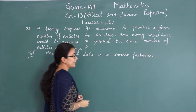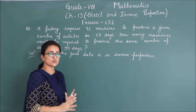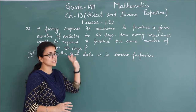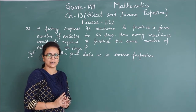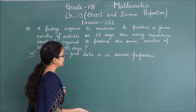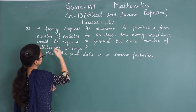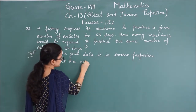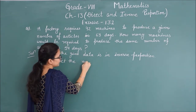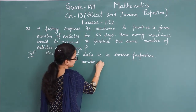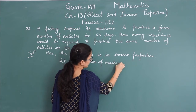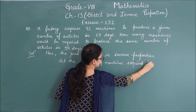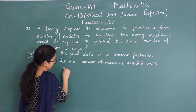Once you identify which proportion to use in a question, solving it is very easy. There's nothing difficult in the solution — just understand the question and identify the proportion. What do we need to find? How many machines would be required. So let the number of machines required be x. Let us make a table.